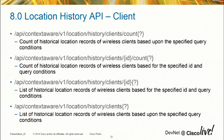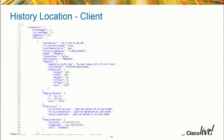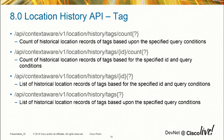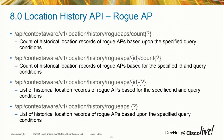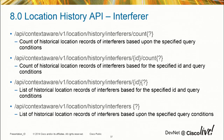The history API lets you get historical information about clients. You can get a count, get history for a specific device ID, or get all historical data for a client. It's essentially the same information as real-time location but historical. This same pattern repeats for tags, rogue APs, rogue clients, and interferers.